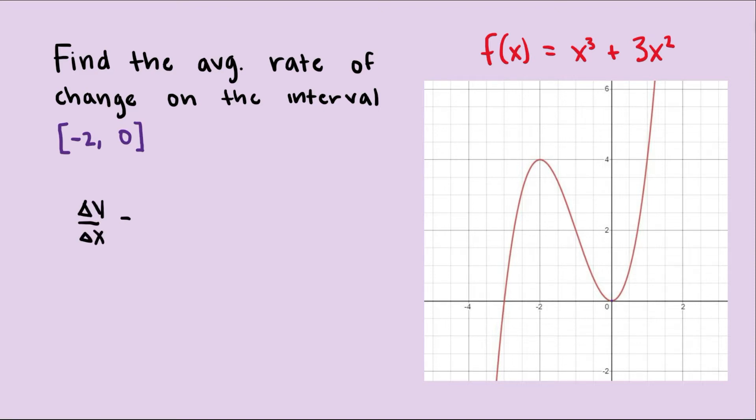If I write it the fancy way, that's just f(b) minus f(a) over b minus a. If we plug in the points, f when x equals b, which is 0, is just 0, minus f when x equals a, negative 2, that's 4.